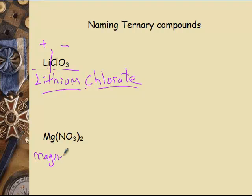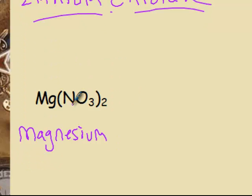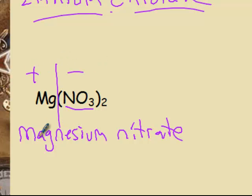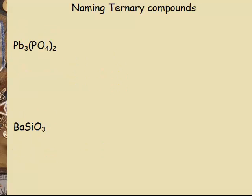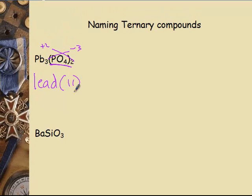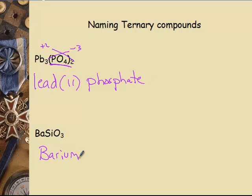Next: magnesium — again, don't be creative. Do you need a Roman numeral? Nope. NO₃ is nitrate, so the two halves: magnesium is the positive ion, nitrate is the negative ion — magnesium nitrate. Lead needs a Roman numeral. If you cross the charges, that's a positive two and PO₄ is a negative three. Is PO₄ a minus three? It is. Therefore it is lead two, and PO₄ is called phosphate — lead two phosphate. Barium is in the second column, no Roman numeral, and the last ion is silicate — barium silicate.